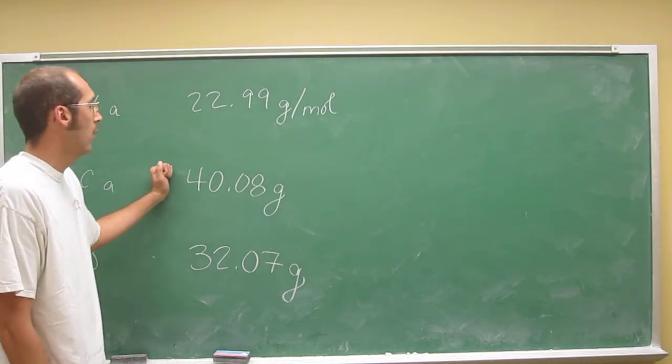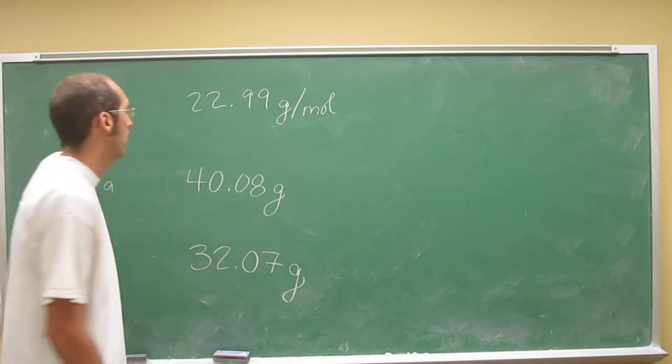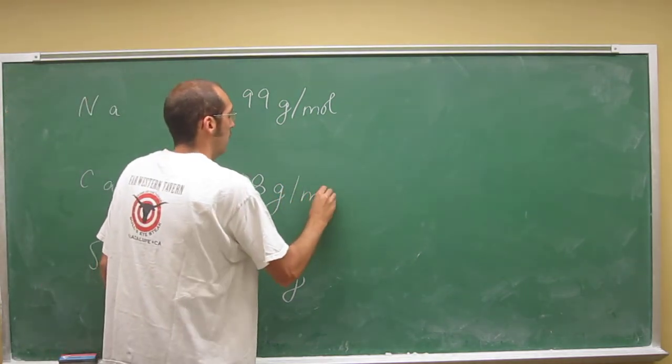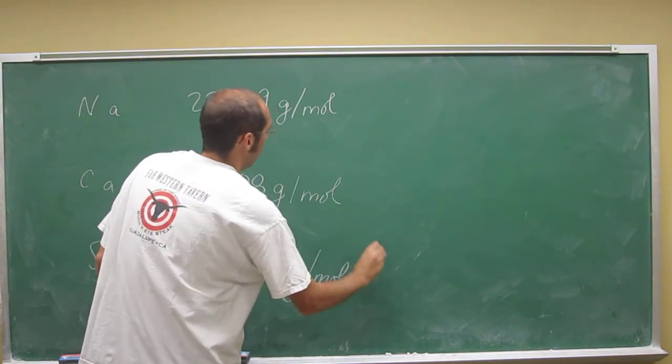So for every one mole of calcium that you have, you're going to have 40.08 grams of it. Okay, so grams per mole.